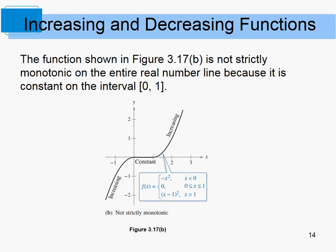This piecewise function is not strictly monotonic because it has a portion that's not increasing. It's defined as −x² up to 0, then the constant 0 from 0 to 1, then (x−1)² after that.